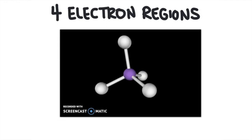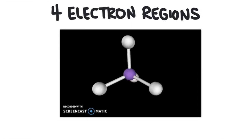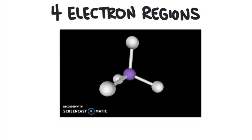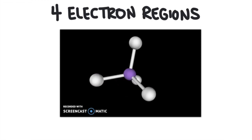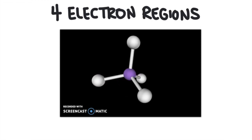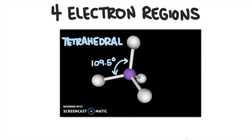Four electron regions will space across the central atom like this — it's kind of like cutting a sphere into four portions. The electron geometry is called tetrahedral and the angle is 109.5 degrees.